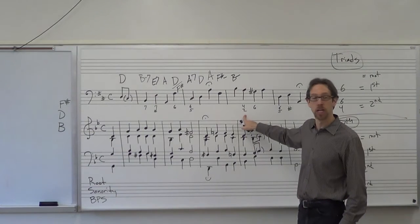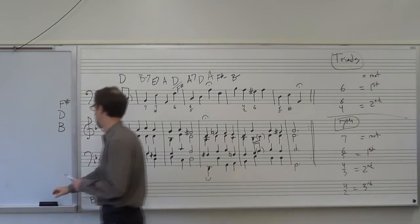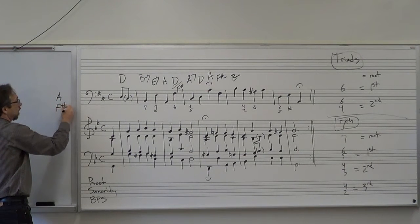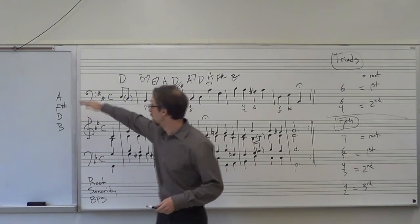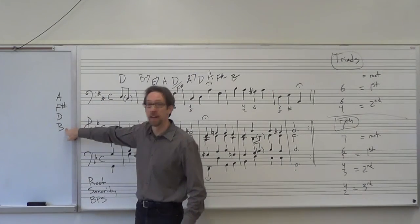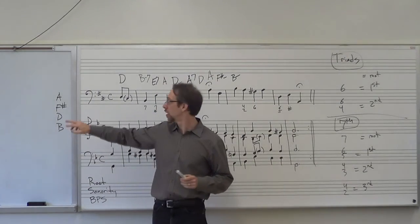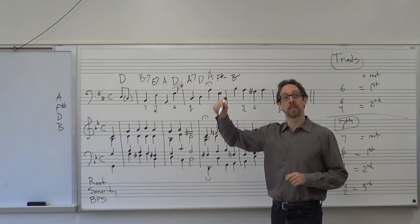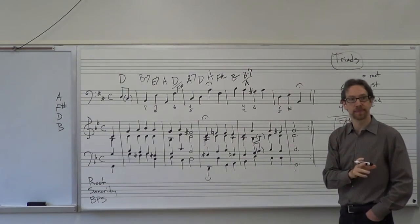Here we use our inversion knowledge again. An A with 4-2 means third inversion of a 7th chord. Since A is the 7th, I go down a third to F sharp, down a third to D, down a third to B — using notes from the key signature. So I get B, D, F sharp, A. Analyzing: minor third, perfect fifth, minor seventh — that's a minor seventh chord. So B minor seventh over A is how I would indicate that.